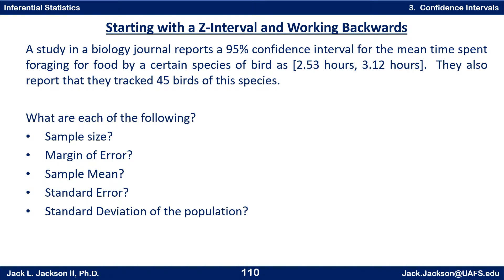For example, suppose a biology journal reports a 95% confidence interval for the mean time spent foraging for food by a certain species of bird as 2.53 hours to 3.12 hours. They also report that they tracked 45 birds of the species.